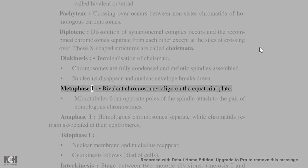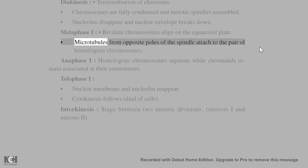Metaphase I: Bivalent chromosomes align on the equatorial plate. Microtubules from opposite poles of the spindle attach to the pair of homologous chromosomes.